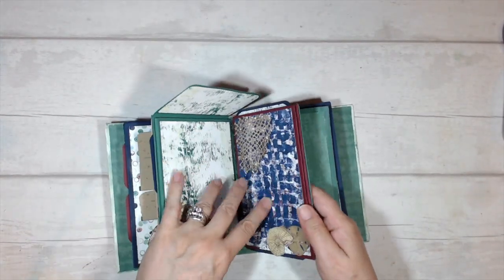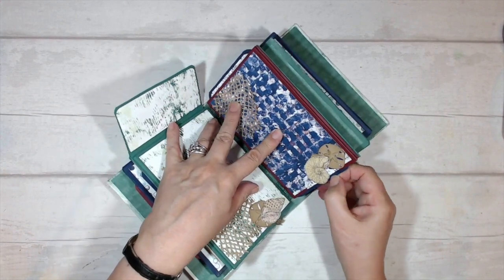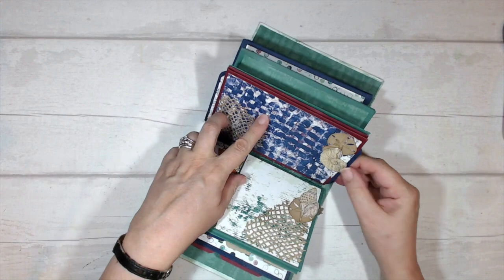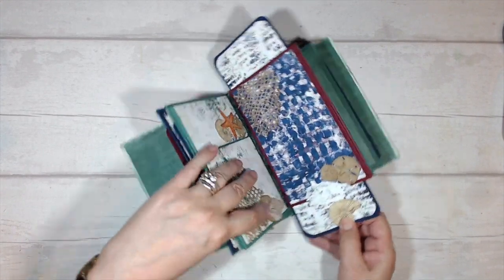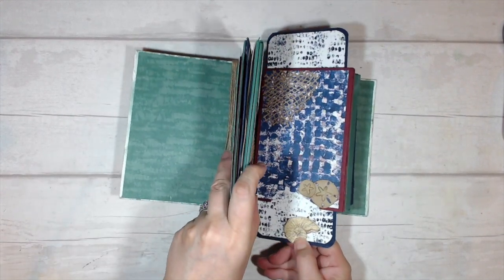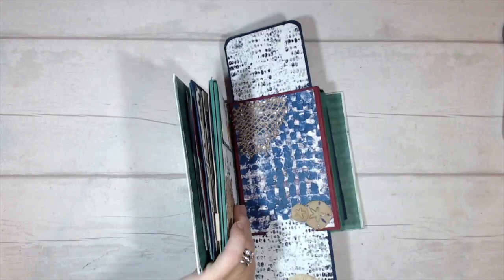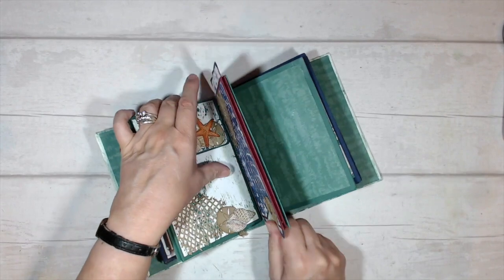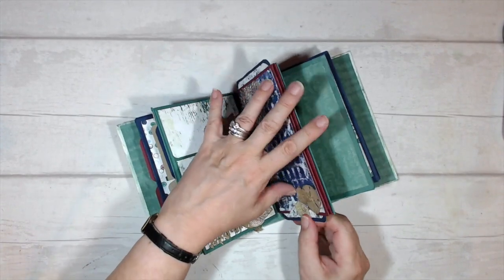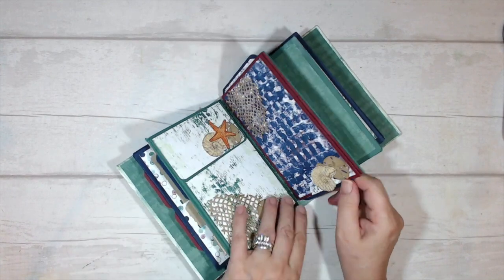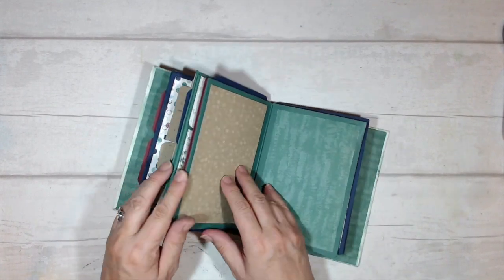So this next one is a hidden slider. If I pull on the bottom of the page there, come on, there we go. My two panels pop out and I've got room for pictures and for journaling. I just want to tuck my seashell back in there.